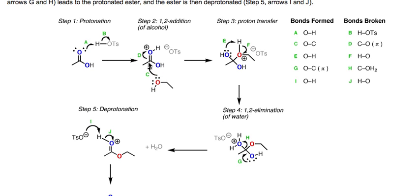We have a weak nucleophile — ethanol as the solvent — and the lone pair from ethanol adds to the electrophilic carbonyl carbon, where there is a partial positive charge. This is the most important mechanistic step in all of carbonyl chemistry: addition, or 1,2-addition. We form a bond between the oxygen and the carbon and break the carbon-oxygen pi bond. We've gone from a carbon-oxygen double bond to a tetrahedral carbon with four substituents.